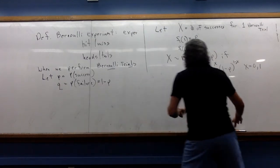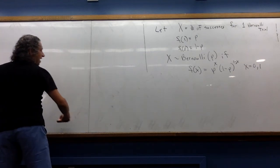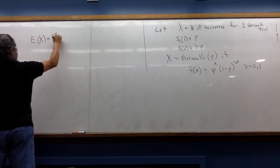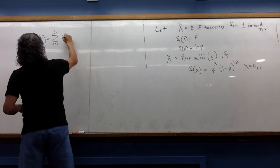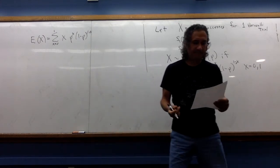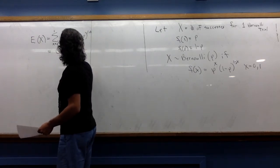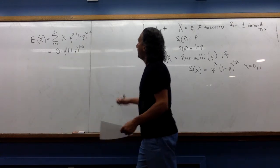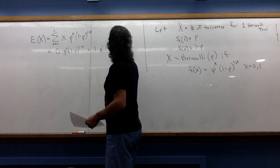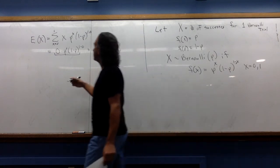Let's compute the expected value of this distribution. The expected value is a measure of average on the sample space. By definition, E[X] is the sum over the sample space of x times the PMF. That gives us 0 times p^0 times (1-p)^1, plus 1 times p^1 times (1-p)^0. The first term is just 0. (1-p)^0 is 1, so we're left with E[X] = p.